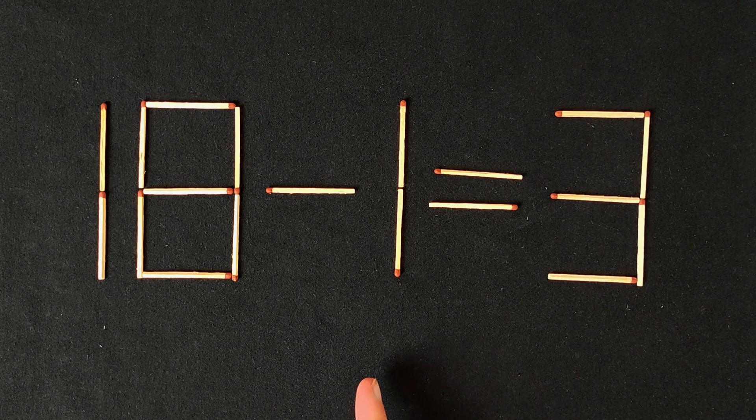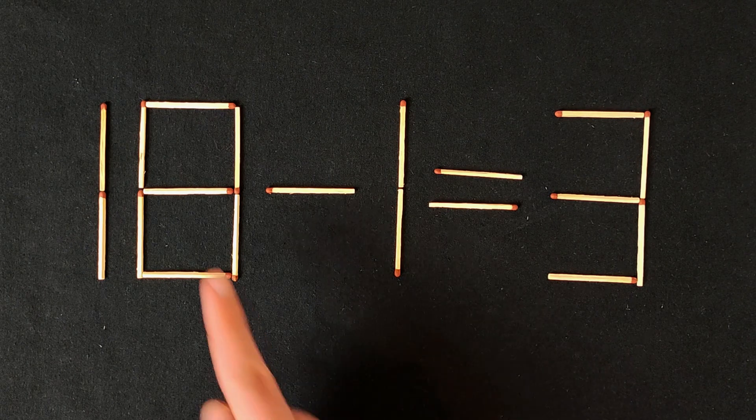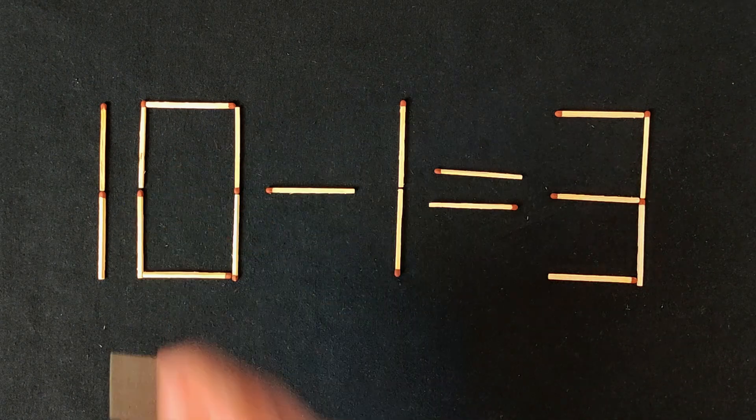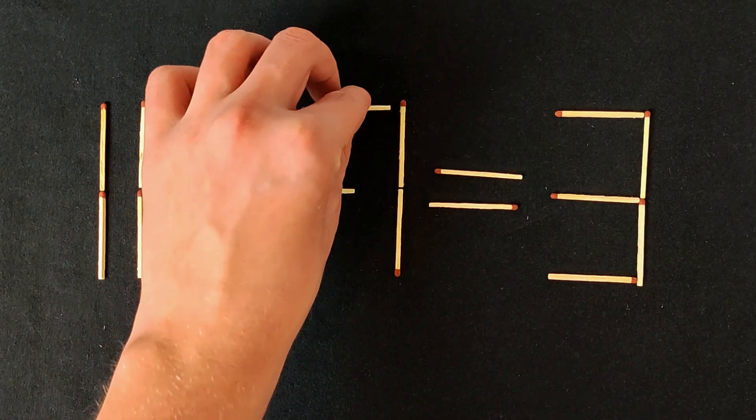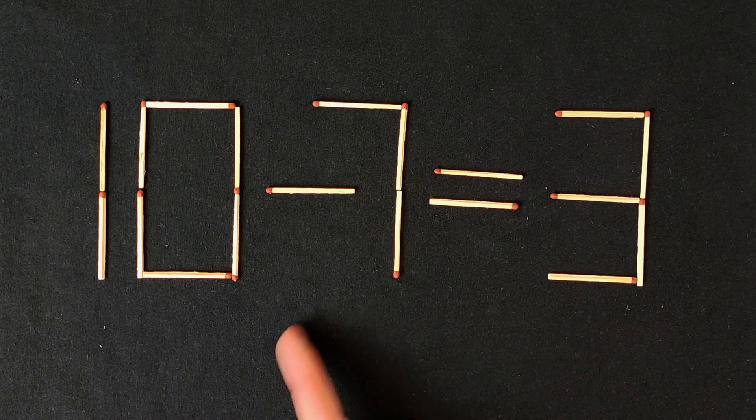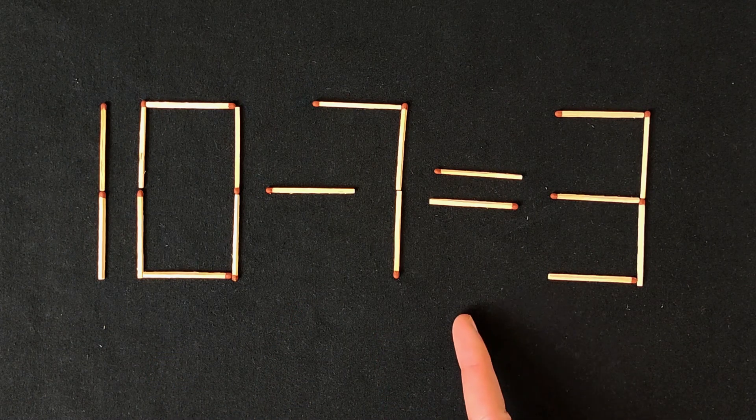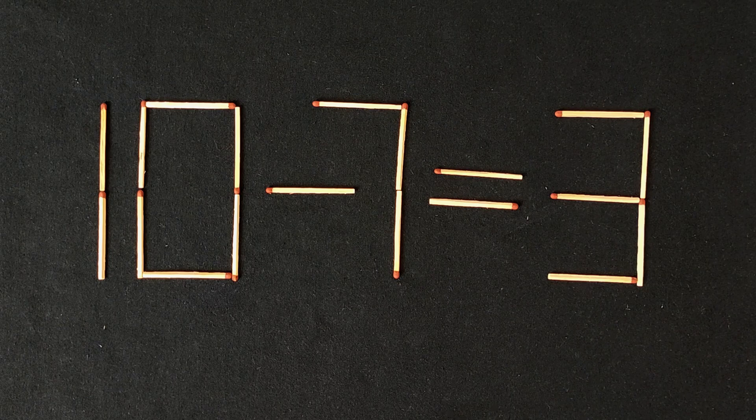And now I'll show you how it's solved. You need to move this match here. And now 10 minus 7 equals 3. That's correct.